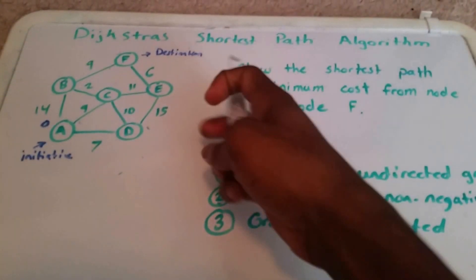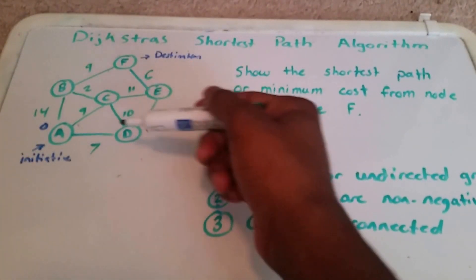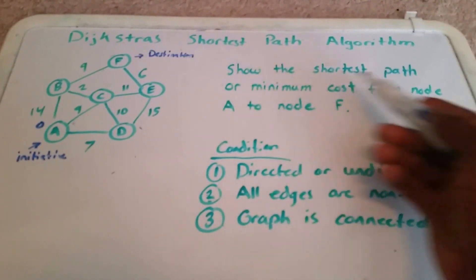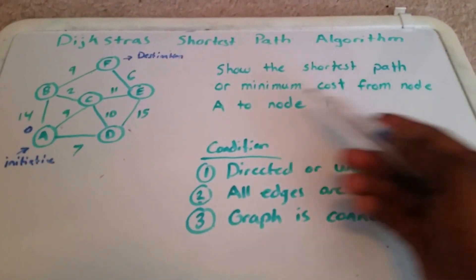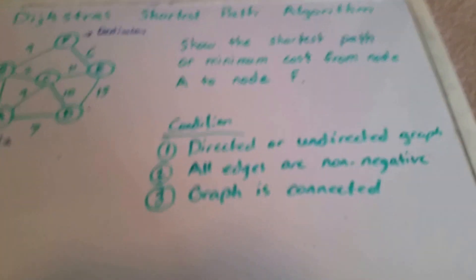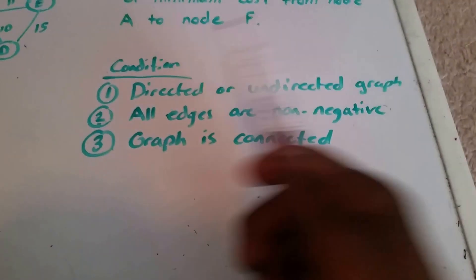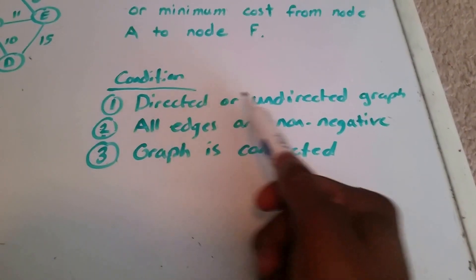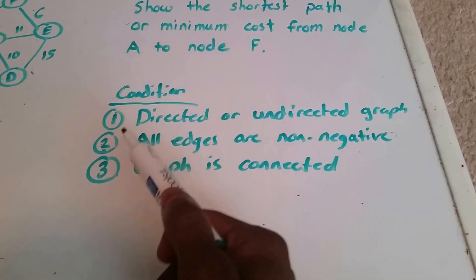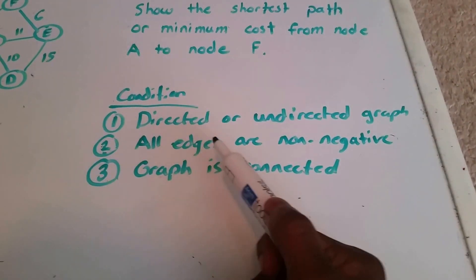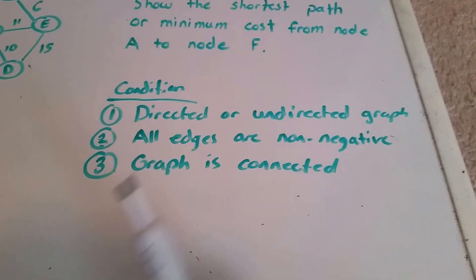Hey guys, this is a video on Dijkstra's shortest path algorithm. Here we have a graph and what we want to do is show the shortest path or minimum cost from node A to node F. There are some conditions that must be met: the graph must be directed or undirected, all edges on the graph are non-negative, and the graph is connected.